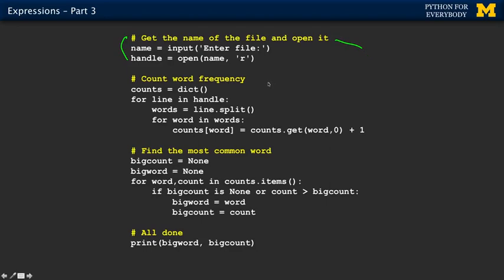That's what's going to happen in the next two lines. These next five lines are count the word frequency. Maybe I should say make a histogram. So make a histogram. And you can just read this.